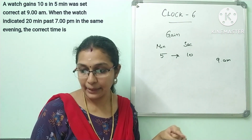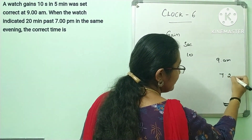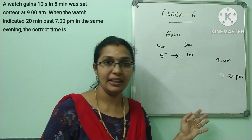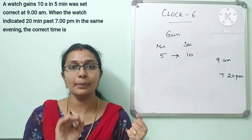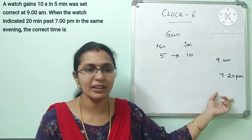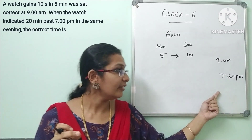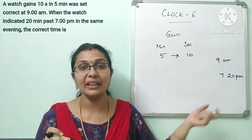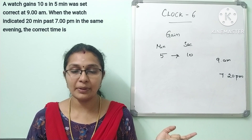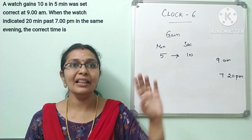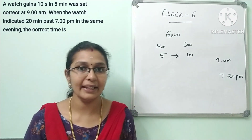In the evening of the same day, when the watch indicates 20 minutes past 7, that is 7:20. The true time is what we need to find. This question is just the opposite of the previous question — here the watch time is given and we need to find the real true time.